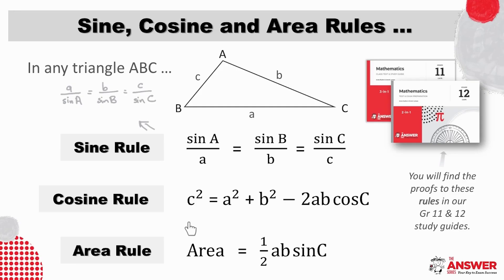Then for the cosine rule we have stated one of the ways this is true from this triangle and the same for the area rule. The proofs of these rules which can be found in our grade 11 and 12 study guides are examinable and so we really encourage you to spend time on them so that you can be guaranteed of these marks.